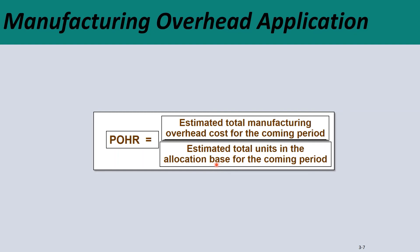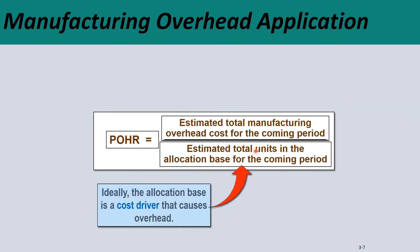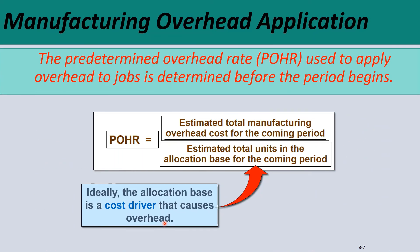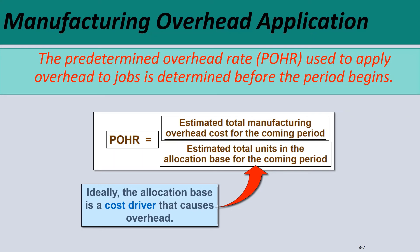In our case, the estimated total is the same as the budgeted total from your annual budget. Ideally, the allocation base is the cost driver that causes the overhead. The predetermined overhead rate used to apply overhead to the job is determined before the period begins — that is, it is a budgeted overhead rate.